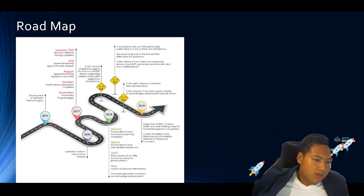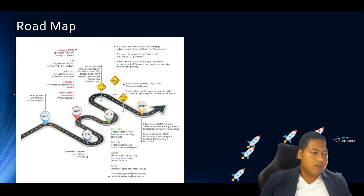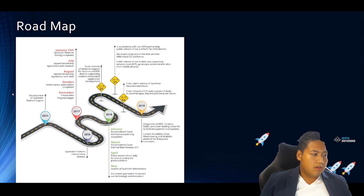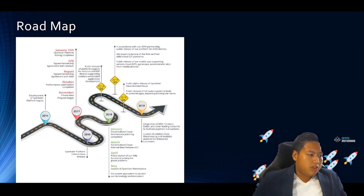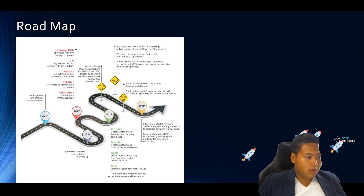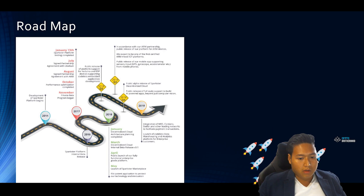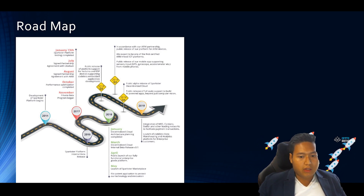For the roadmap, you can see that development of the platform started in 2014. They signed the partnerships with ARM and Libelium last year in 2017, launched the fully functioning enterprise-grade platform earlier in April this year, and launched the marketplace and filed a patent in May. Next year, they are going to be integrating Neo, Cardano, and Stellar to facilitate payment transactions.